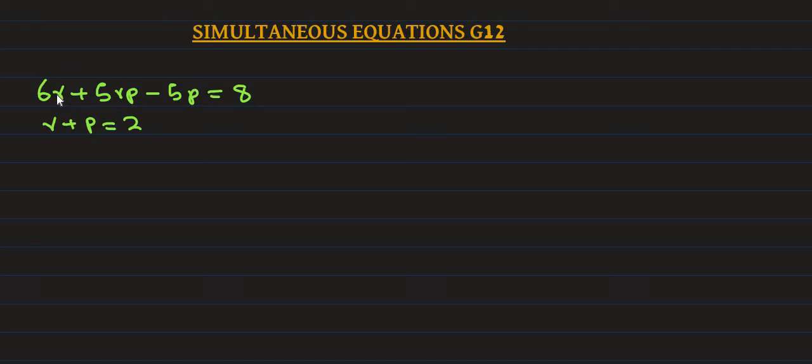Now we draw the dot for equation 1 and equation 2. We label them. From the question, we have two variables, r and p. For example, in equation 1 we have 6r plus 5rp minus 5p equals 8. From r plus p equals 2, we get p equals 2 minus r. That's equation 3. Now we have one variable, so we substitute equation 3 into equation 1.